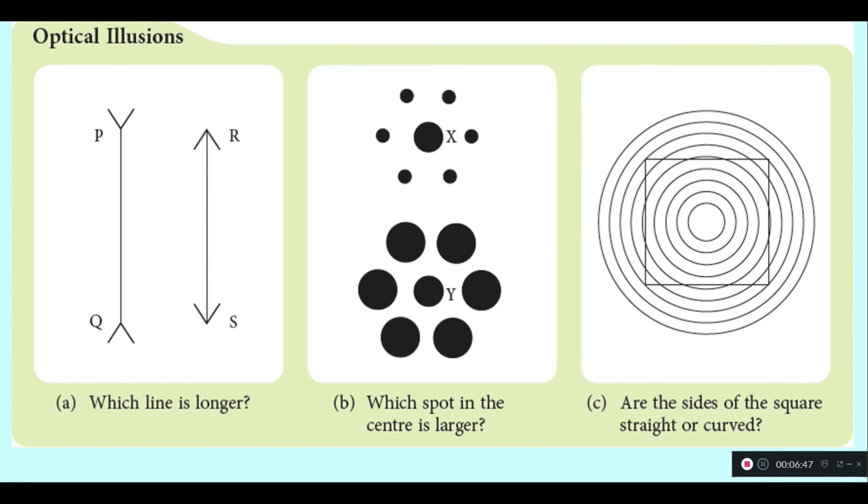Now, let's look at image B. Which spot in the centre is larger — spot X or spot Y? At first glance, spot Y seems larger than spot X. Because of the spots that surround spot Y, it makes Y look bigger compared to X.